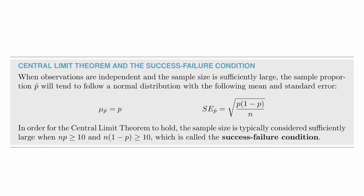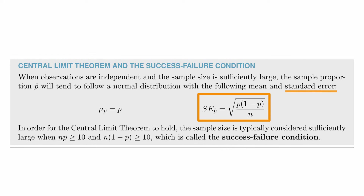In short, when we take a sample where the observations are independent and the sample size is sufficiently large, the sample proportion p-hat tends to follow a normal distribution with mean equal to the true population proportion and a standard error given by a specific formula. Standard error is a new term — it basically corresponds to the standard deviation of a point estimate, used to differentiate from the standard deviation of individual observations from a population.